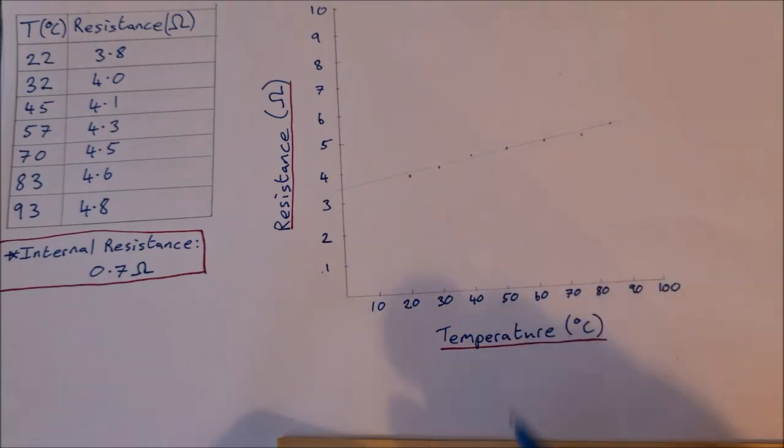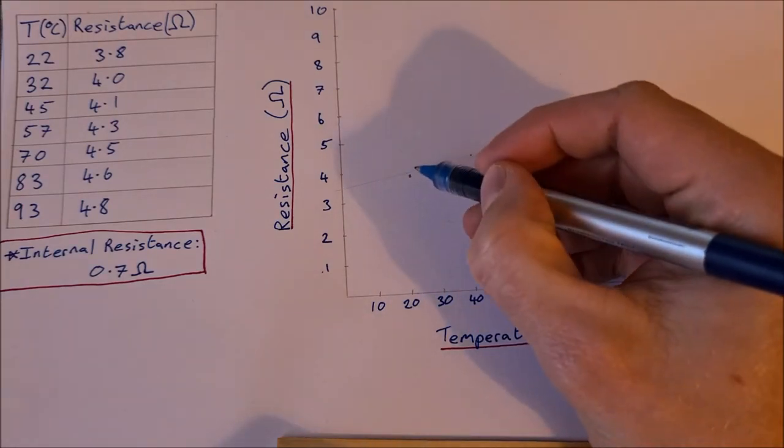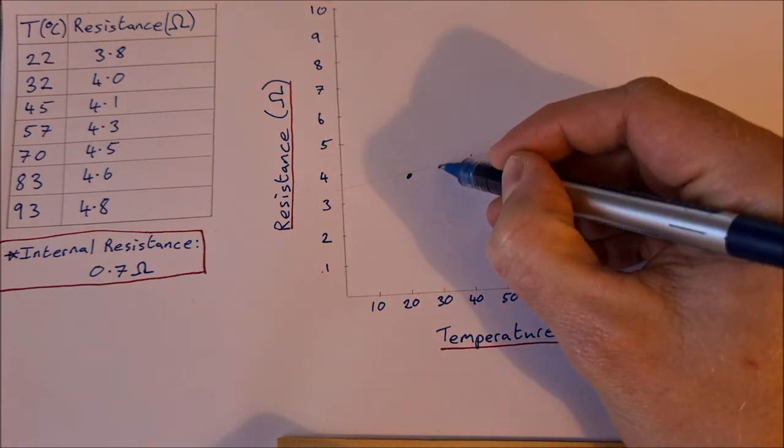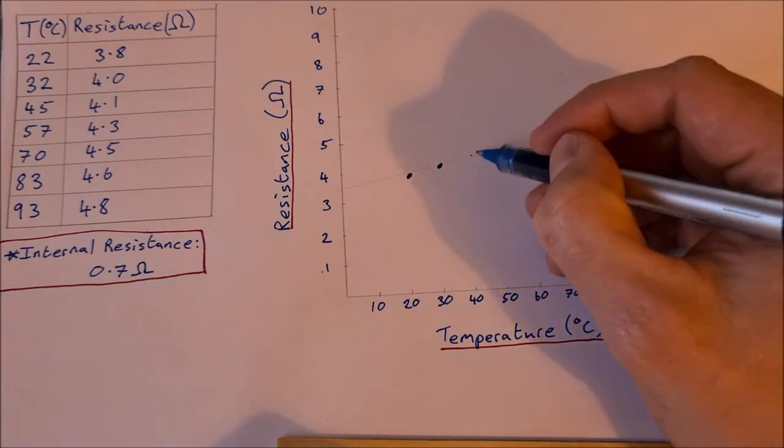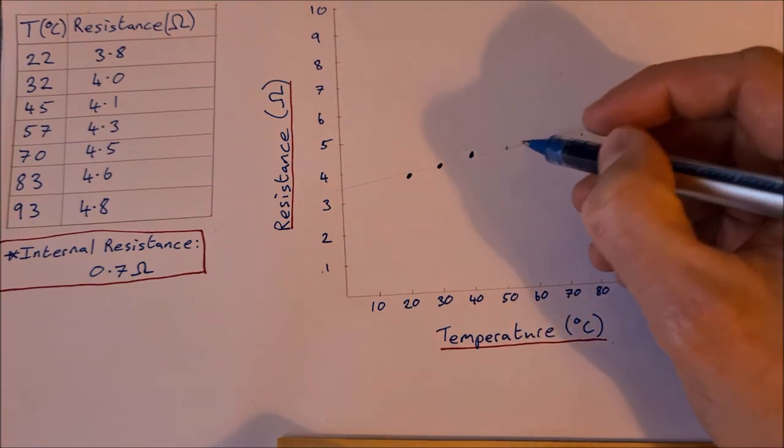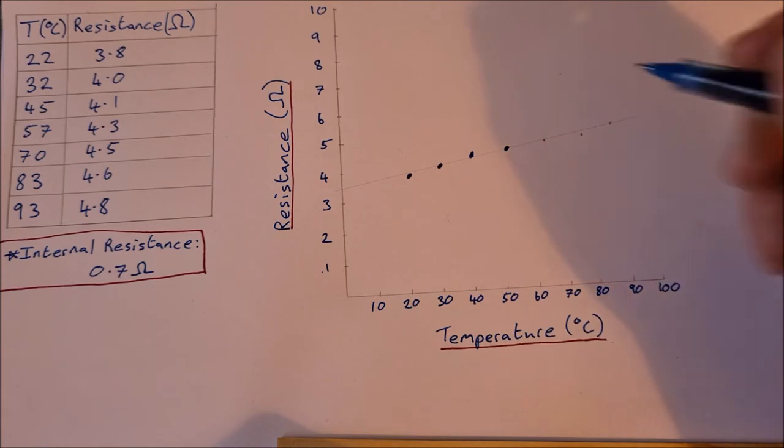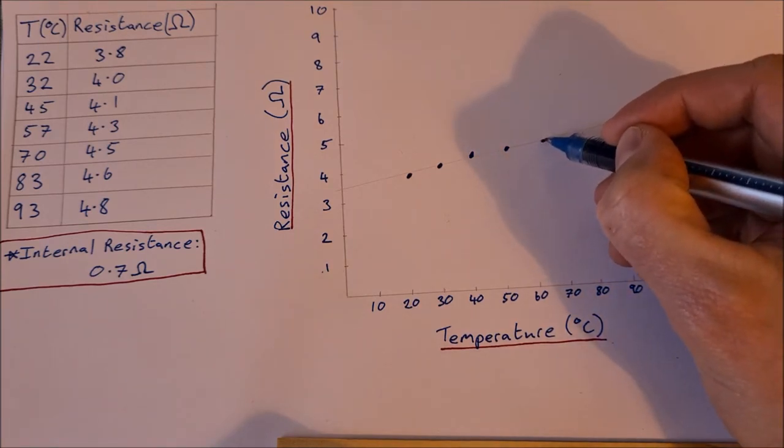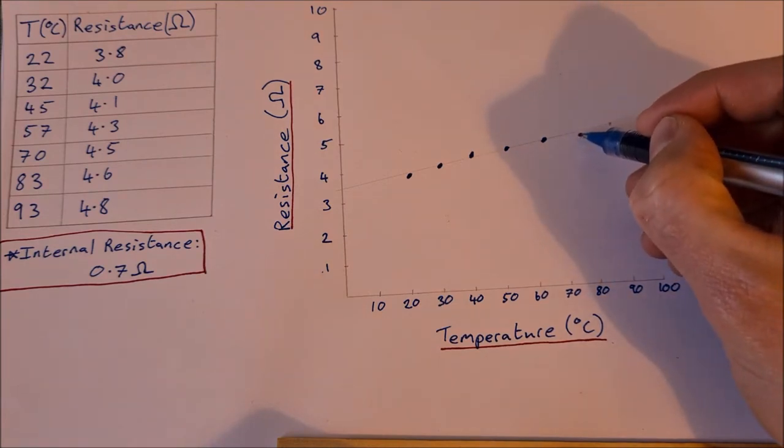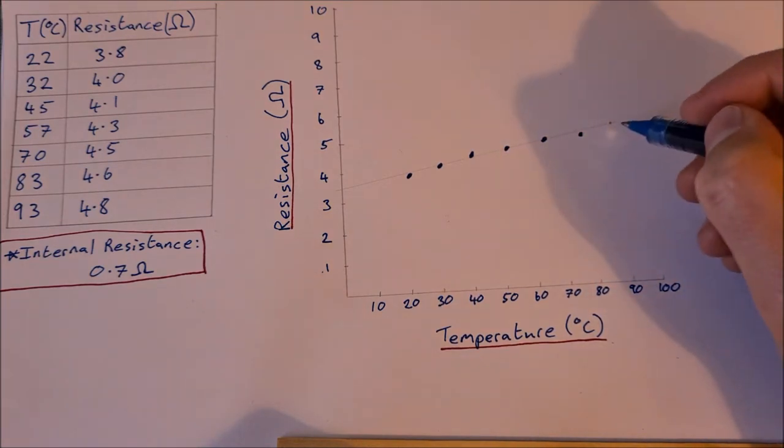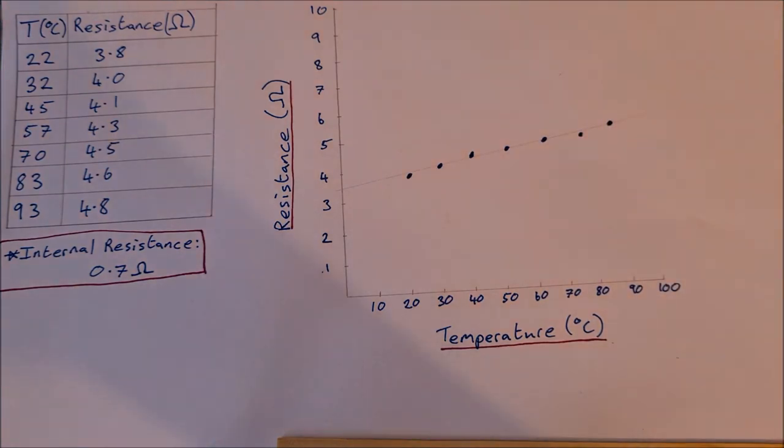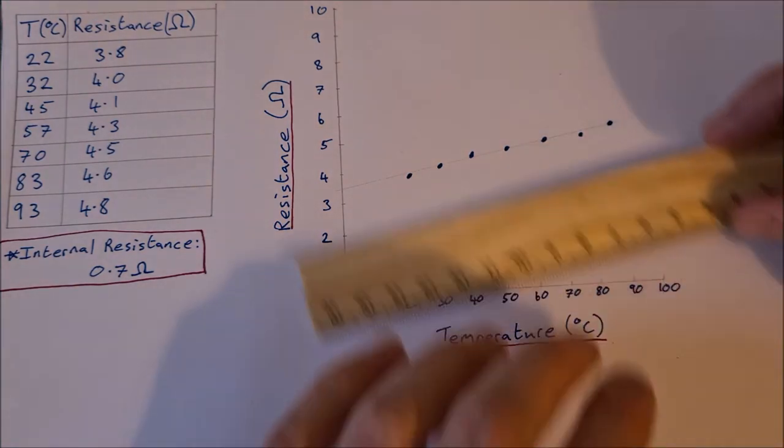This is the actual resistance of the metallic coil at different temperatures. We have 22 and 3.8, 32 and 4.0, 45 and 4.1, 57 and 4.3, 70 and 4.5, then 83 and 4.6, and the final one was 93 degrees Celsius and 4.8 ohms.